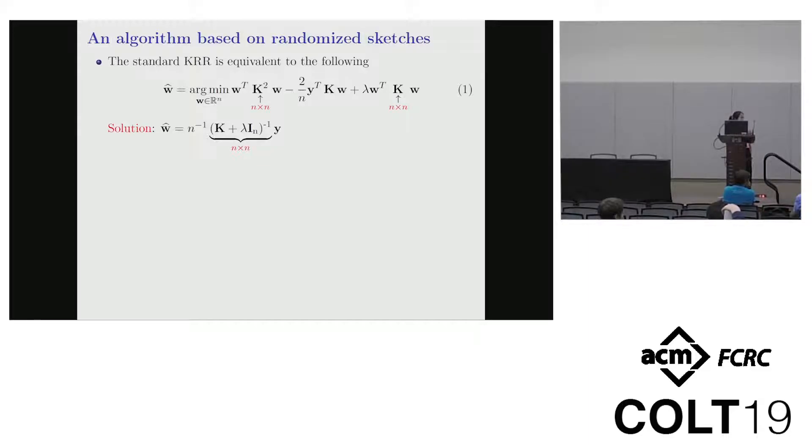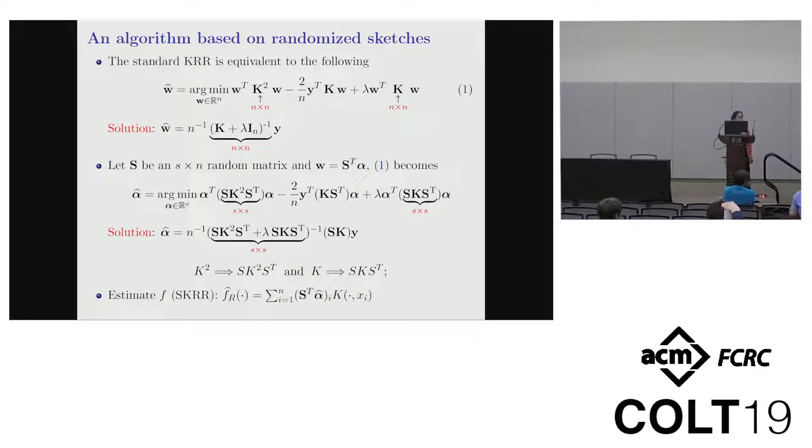So how can we improve the computing efficiency? Here we introduce the random projection. Suppose S is the random matrix we introduce here. Instead of estimating W directly, we use S transpose alpha to replace W. In this case, we can reduce estimating the n dimensional vector W into estimating the S dimensional vector alpha hat. Then we can get the randomized KRR estimator alpha hat R. As shown here, it has an explicit formulation and the inverse of the matrix just involves S times S matrix. Thus the computing cost is S cubic. If S is typically smaller than n, then the computing cost can be decreased sharply.